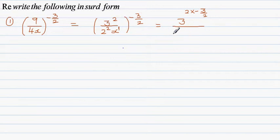Which is 2 to the power 2 times negative 3 halves, times x to the power 1 times negative 3 halves. So this simplifies...